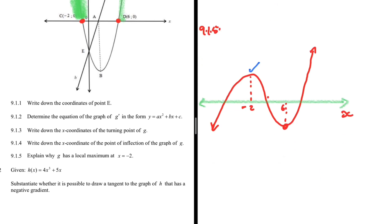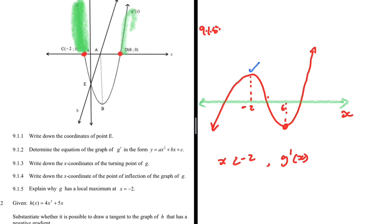You can sketch this graph to explain it, or simply state: when x < −2, G'(x) > 0, and when x > −2, G'(x) < 0. That explains the local maximum at x = −2. That is 9.1.5.